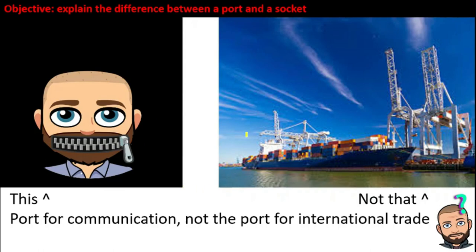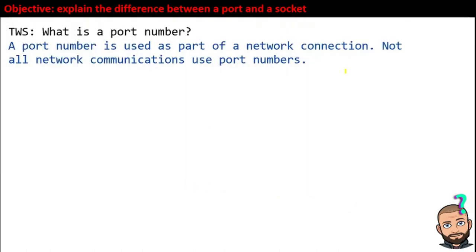Instead of goods being sent across the ocean in containers, we have packets being sent across the internet. And once at an IP address — that is, a specific city — it needs to go to a specific port in order to drop those packets off. So simply, a port number is used as part of a network connection.